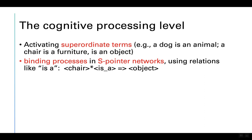We need binding in the comprehension task, where we try to activate superordinate items — for example, a dog is an animal. We try to activate the superordinate item 'animal' when we hear the item 'dog.' This is done by a binding process as well.